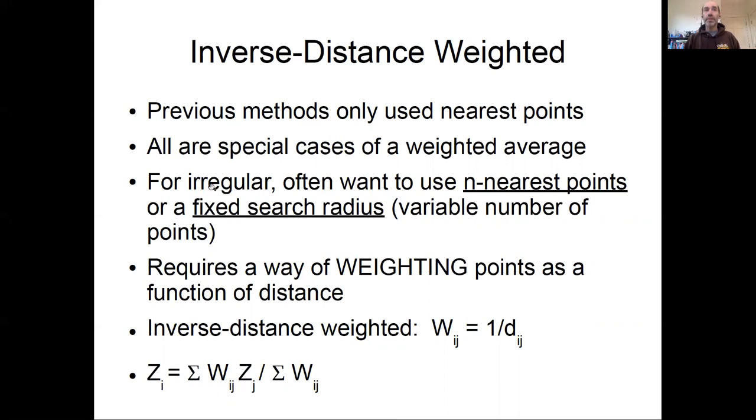For really irregular data, we might want to use the n nearest points or a fixed radius search. You don't have to calculate the weights out to infinite distances with infinitesimally small weights—you can truncate that at some radius or some number of points. The key really boils down to how you calculate those weights, so you need some way of weighting points as a function of distance. The simplest version of that is just weighting by one over distance.